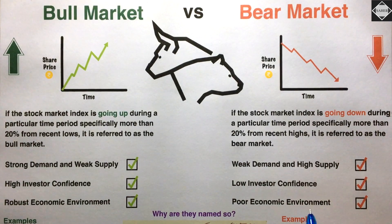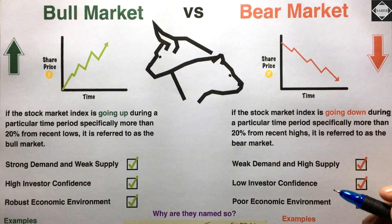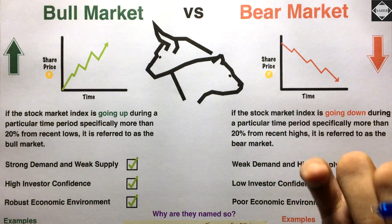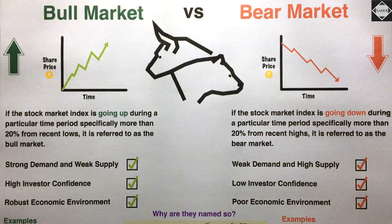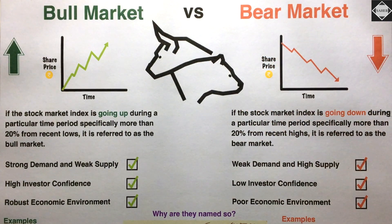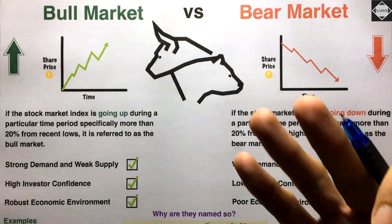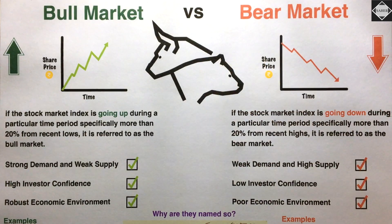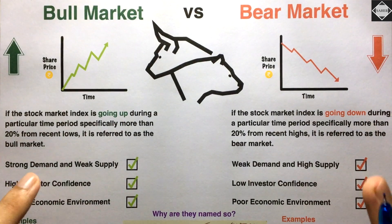The third characteristic of bear market is poor economic environment. Right now we can see this — bear market is going on in India, in the US, and everywhere. In the US there is a recession. Poor economic environment means low GDP, high inflation — right now because of supply chain problems and COVID there is high inflation — along with high unemployment and insufficient disposable income.